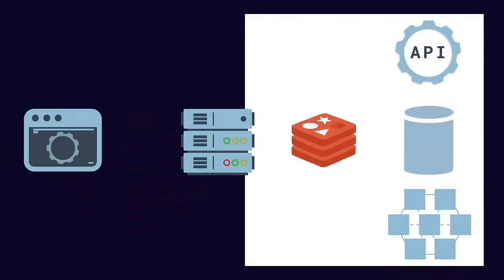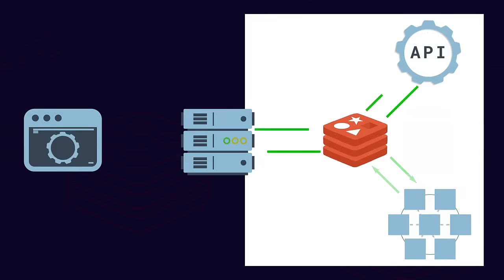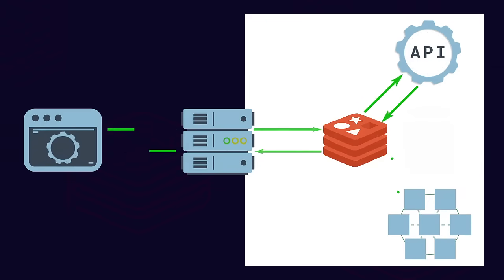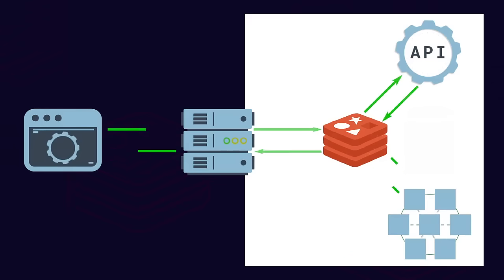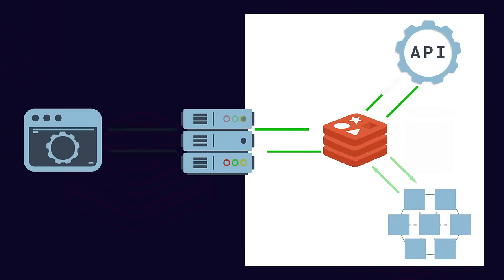It's worth considering whether you really need to add a cache. For certain services, it might make sense to make Redis itself the system of record. This way, the data is always served from memory, and if you take advantage of Redis's persistence and high availability features, you can ensure that your data is still safe and available.